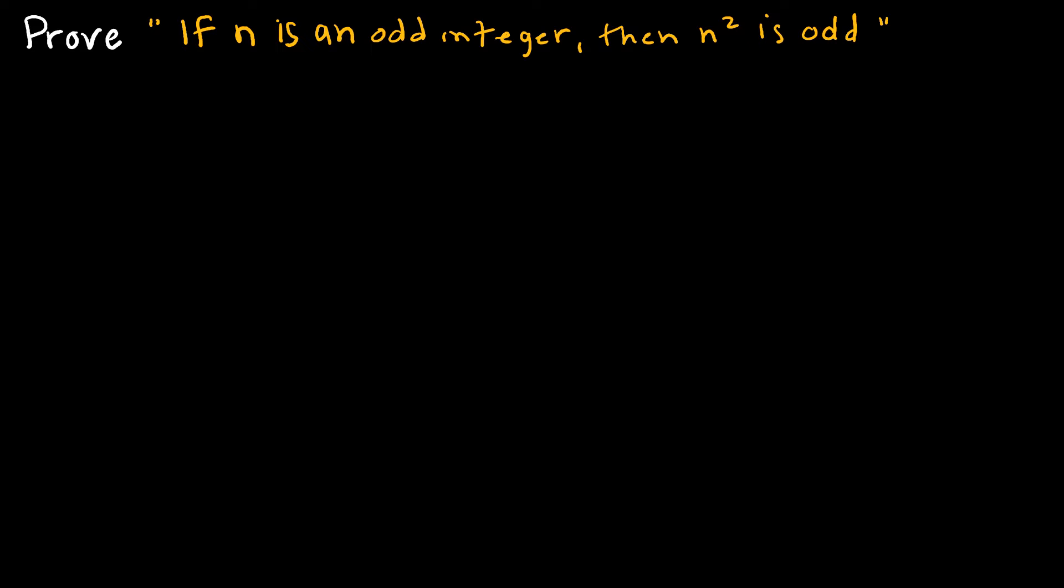So let's take a look at how this might look. Now we are trying to prove if n is an odd integer, then n squared is odd. So one thing that might be helpful is we do have some definitions. We know that if something is even, an even value of n, we could write as 2k. So if it's an even integer, we can call n equals 2k, where k is some other integer.